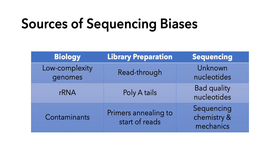Each of these problems — sources of bias from biology, library preparation, and sequencing — leave characteristic signatures in the data. One of the most popular tools for detecting sequencing bias is FastQC. I'm going to run you through each of the FastQC modules, pointing out how to detect these problems in your data.